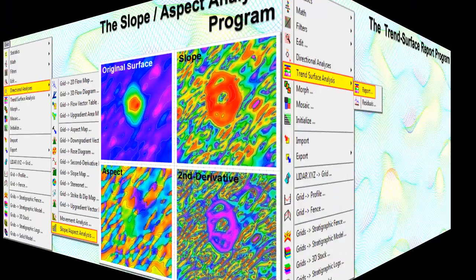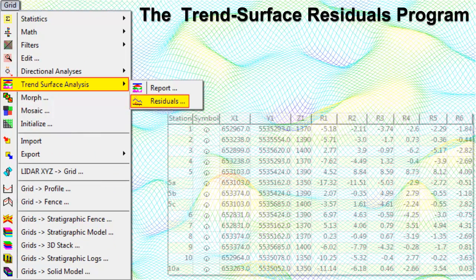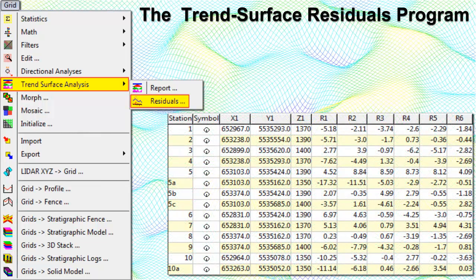The Trend Surface Analysis Report program performs a polynomial trend surface analysis on a selected Z-value column in the datasheet and lists the correlation and residuals for first through sixth order polynomials in a report. This report can help you determine what trend order to select when creating a trend surface grid model, and it can help you isolate regional anomalies by computing trend residuals. The Trend Surface Residuals program performs a trend surface analysis on a selected Z-value column and computes the residuals for a selected polynomial order, representing the difference between observed Z-values and trend Z-values, storing the residuals in a datasheet column of the user's choice.